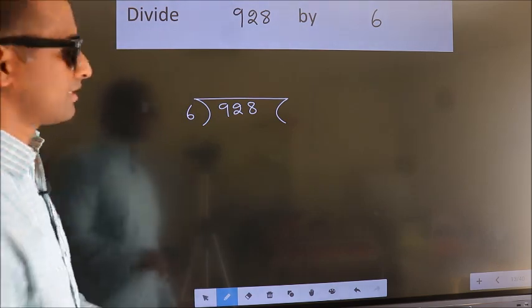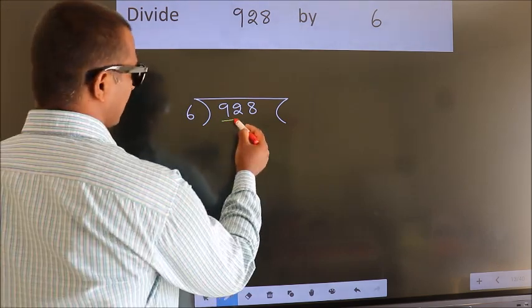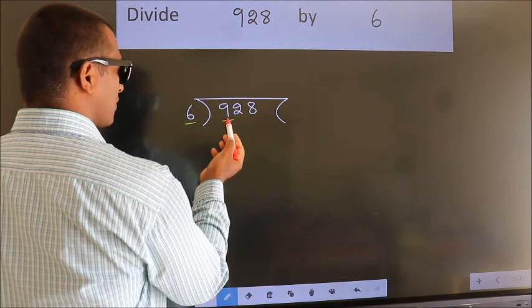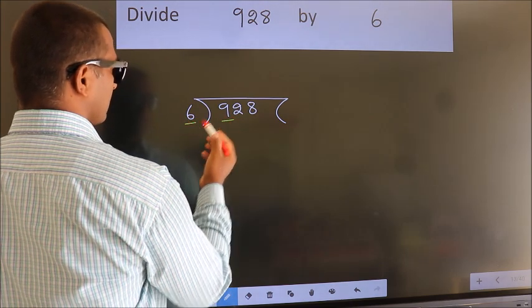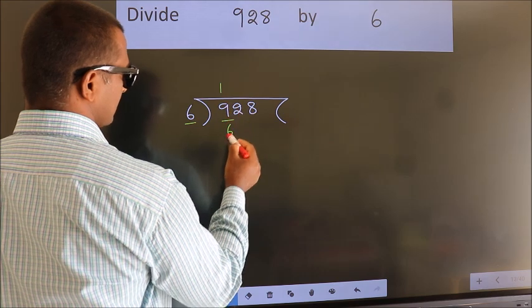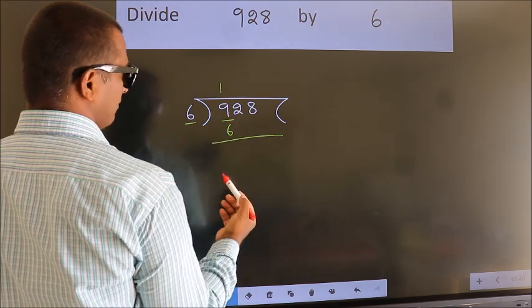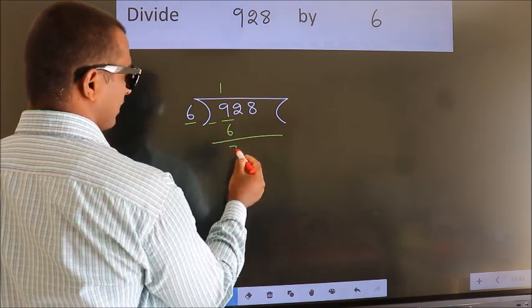Next, here we have 9, here 6. A number close to 9 in the 6 times table is 6. Now we should subtract. We get 3.